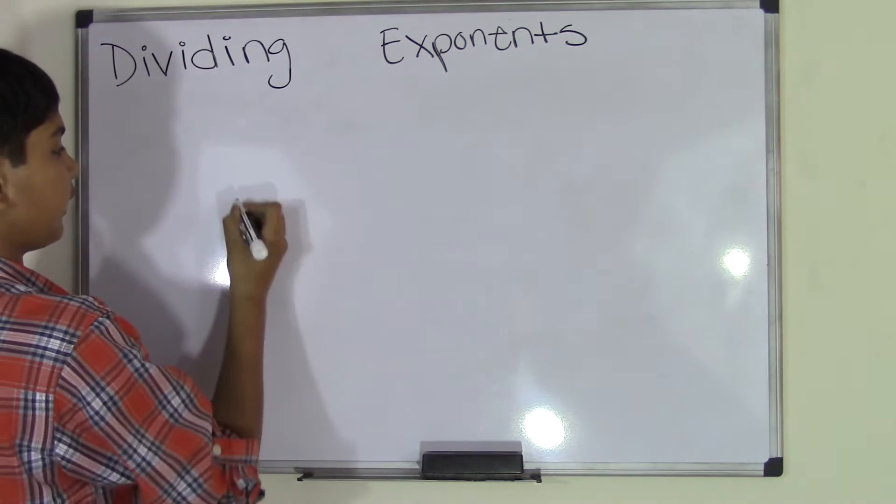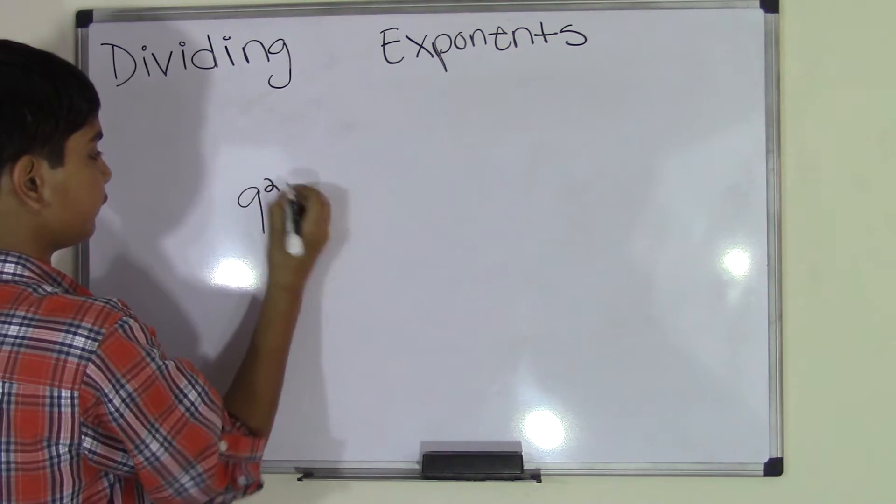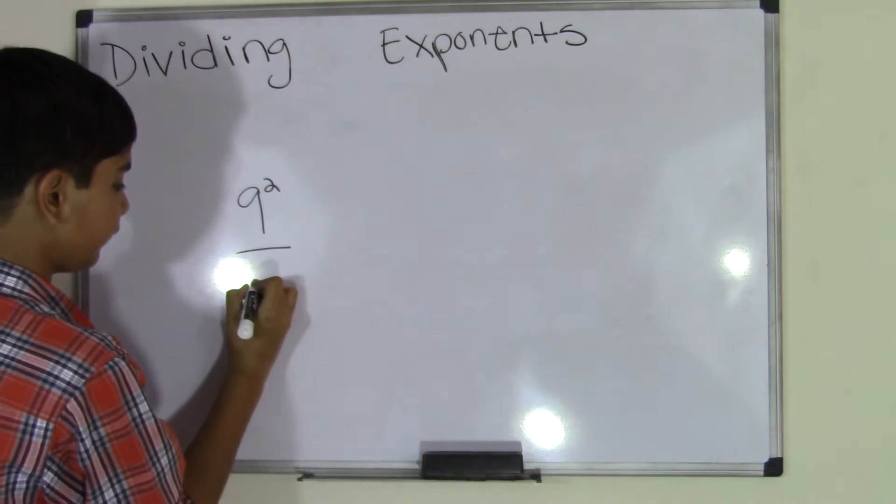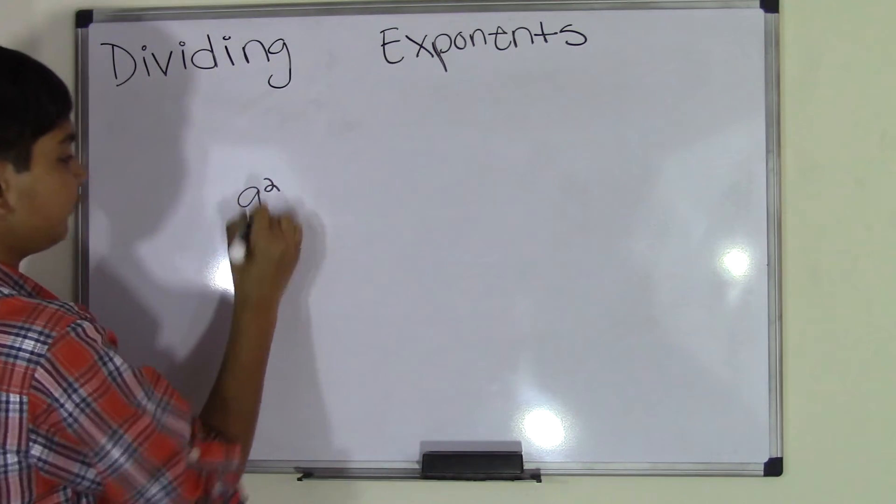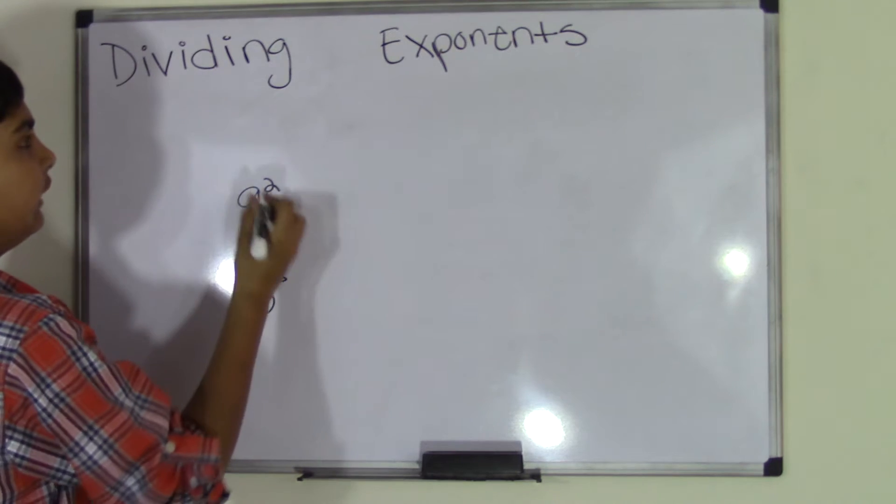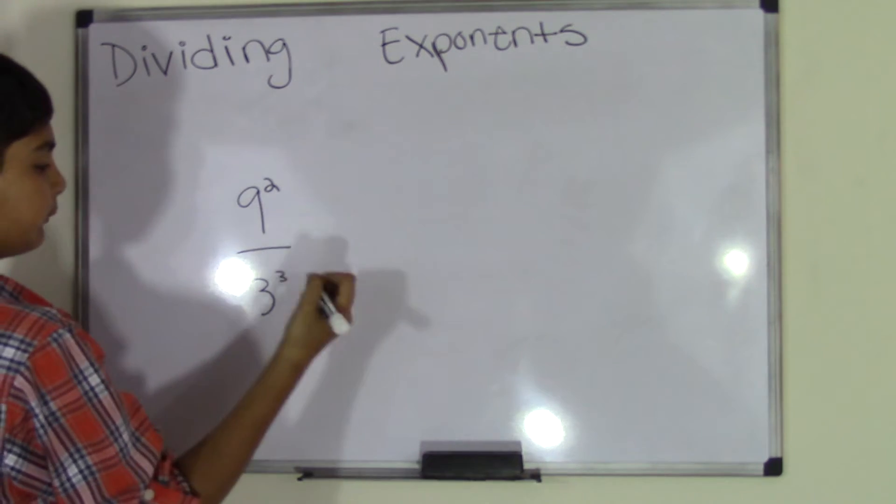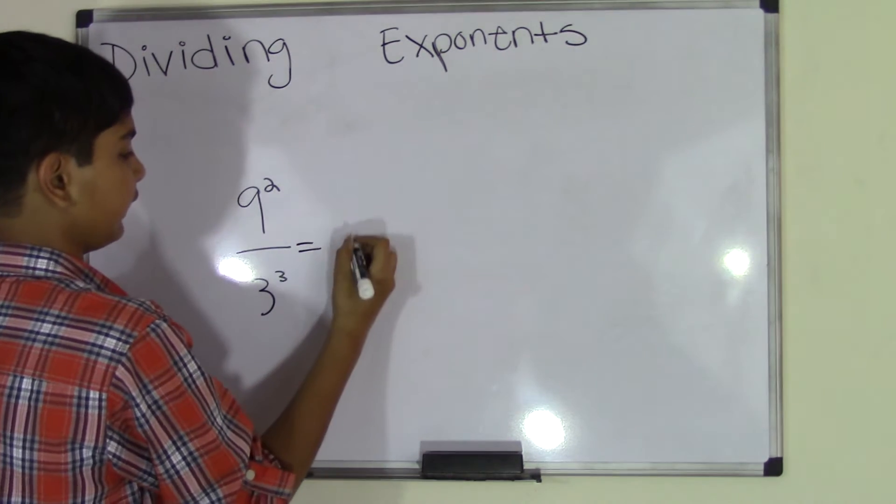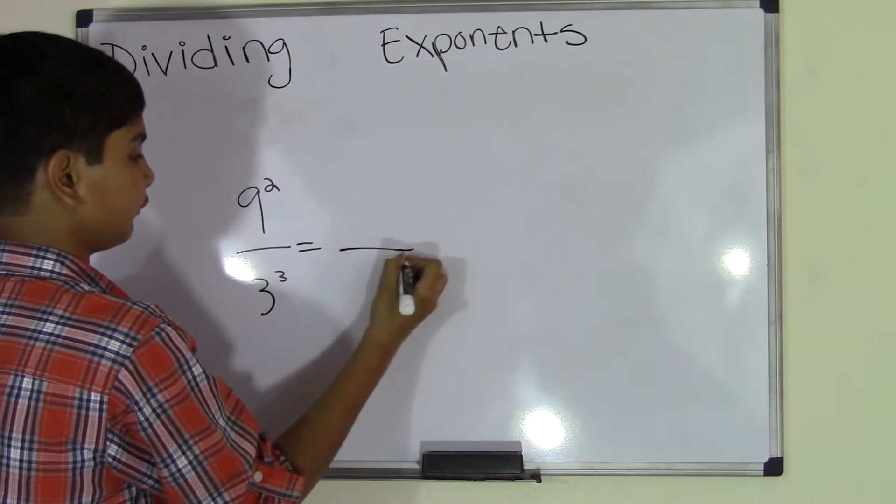For example, if you have a problem, 9 to the power of 2 divided by 3 to the power of 3. And yes, you write it this way because this is how you do dividing exponents. So we go ahead and write the equal sign and we make another line over here.